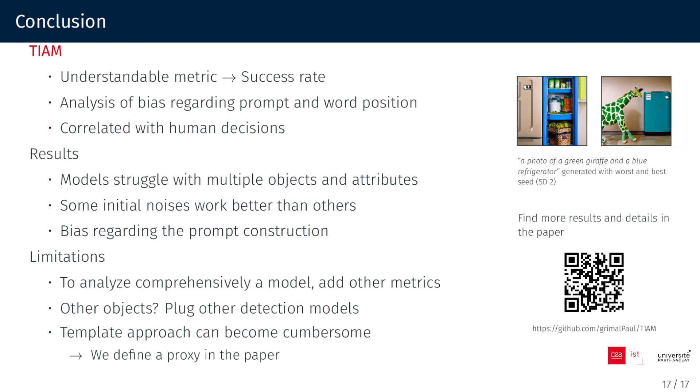To sum up, we created a new metric focusing on catastrophic neglect and attribute binding. The metric is more understandable than CLIP score and better correlated with human decision making. We showed that models struggle with multiple objects and attributes. We showed that some initial noises work better than others, and also that first objects in the prompt are more likely to appear and be correctly bound.